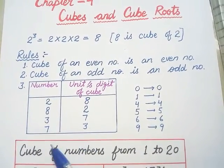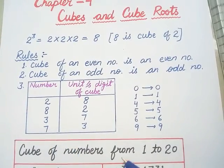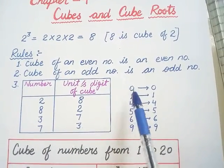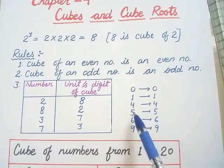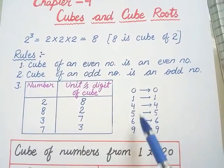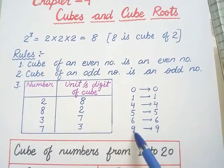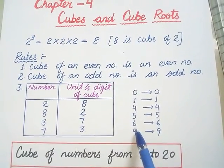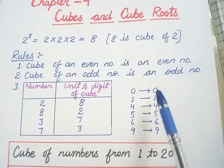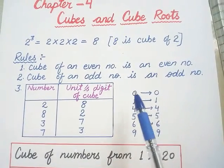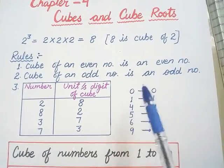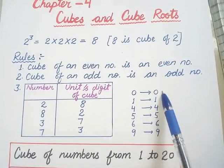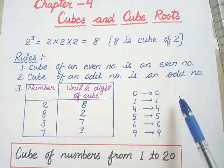Now the rest of the digits are 0, 1, 4, 5, 6, and 9. If these digits are the unit digit of a number, then the cube's unit digit will be the same. If the number's unit digit is 0, then the cube's unit digit will also be 0. This will be easy for you.